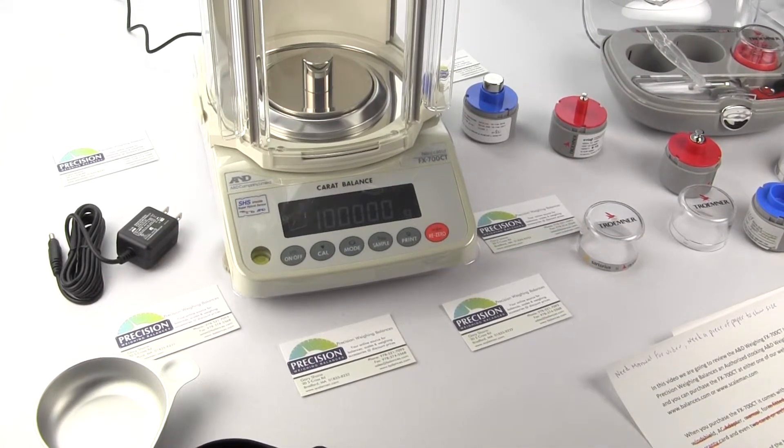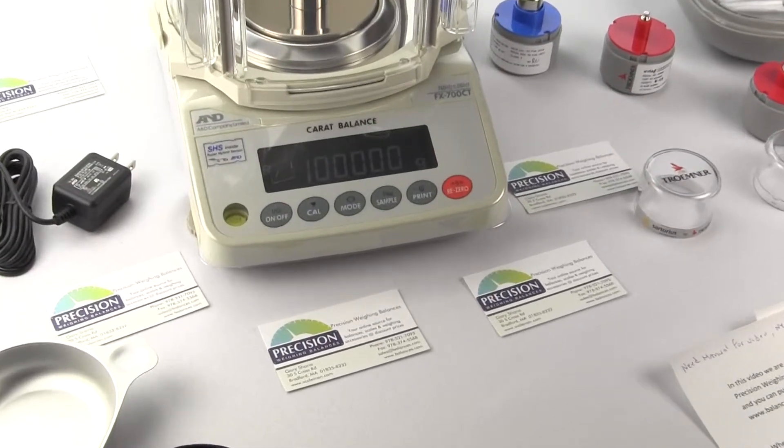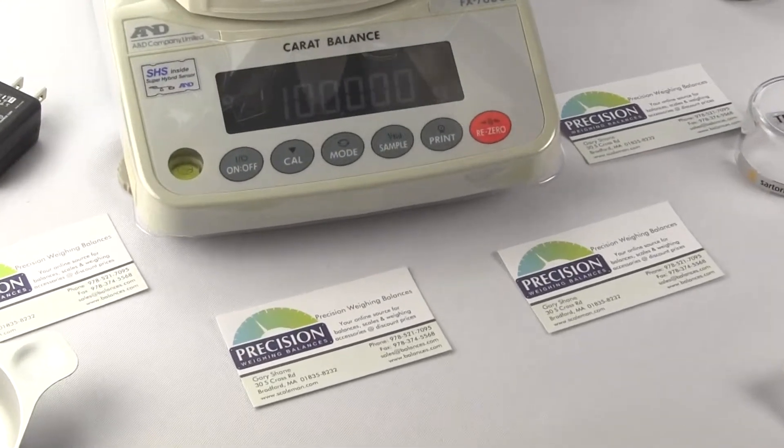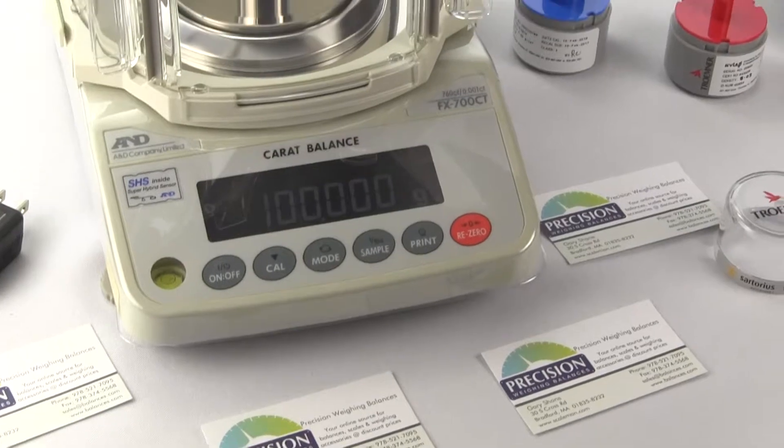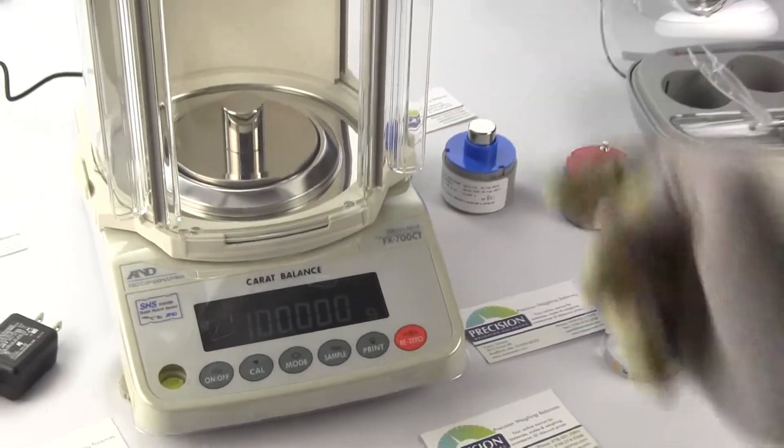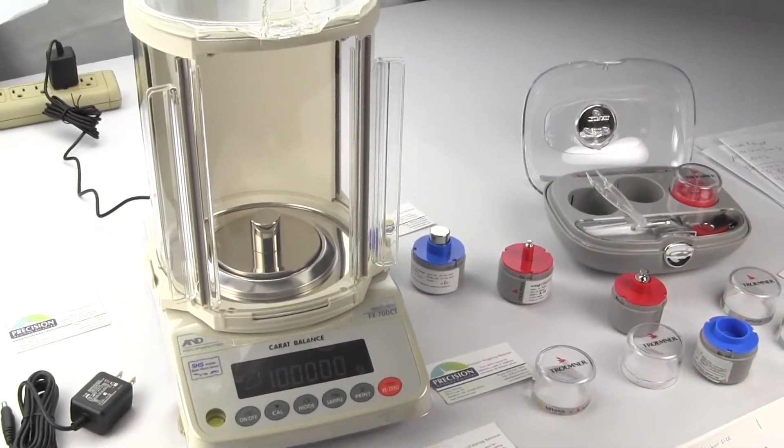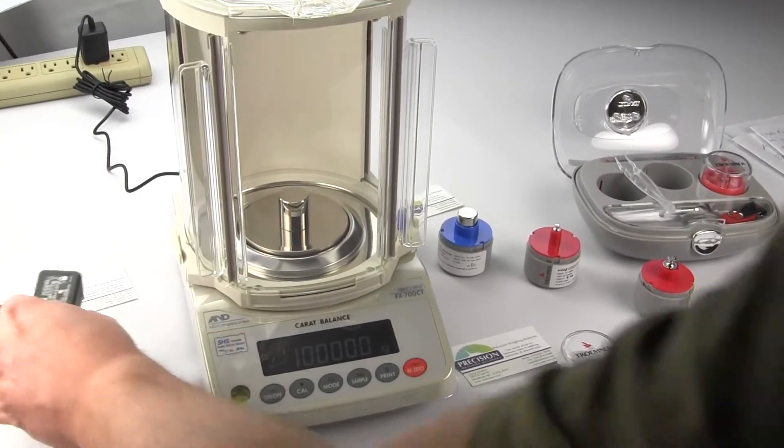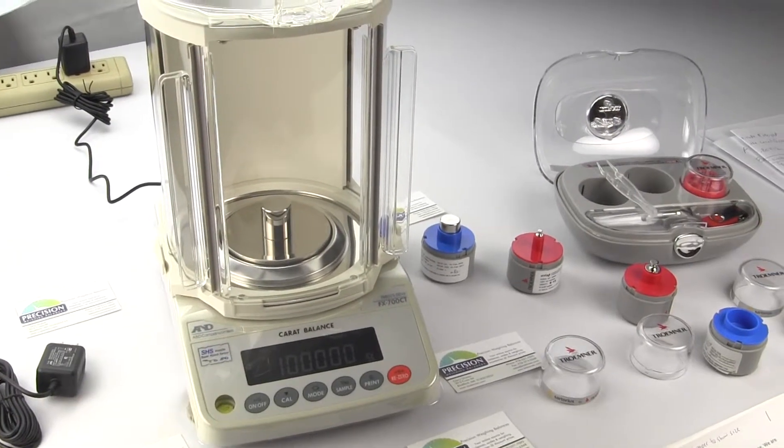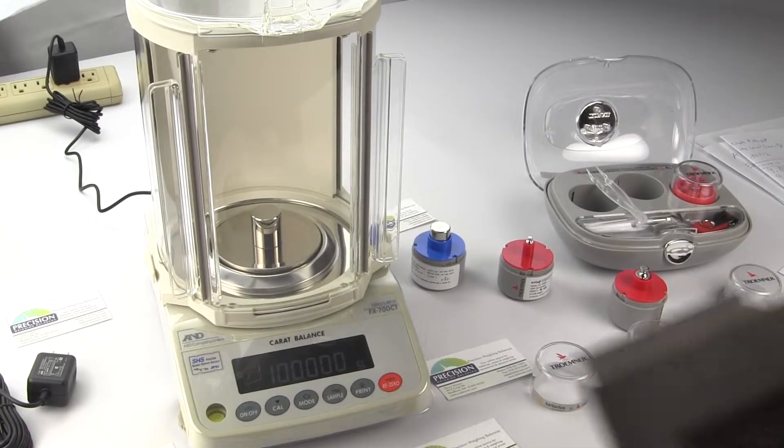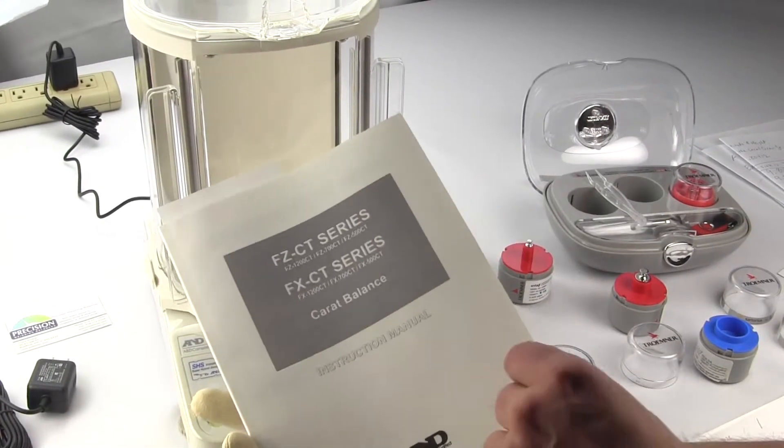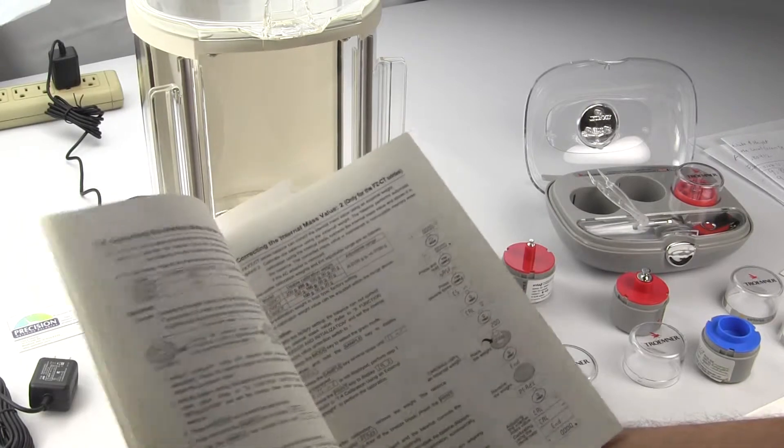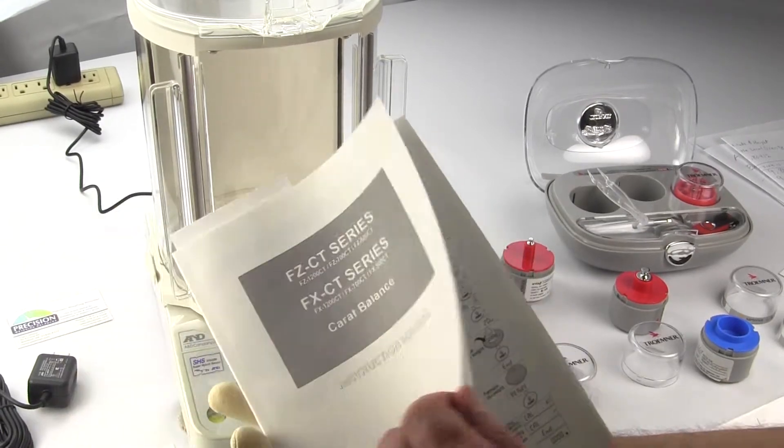When purchasing the FX700CT the balance comes with this large tall 7.1 inch windshield. It also comes with the AC adapter. There's a well-documented user manual here and the manual clearly defines all of the steps.